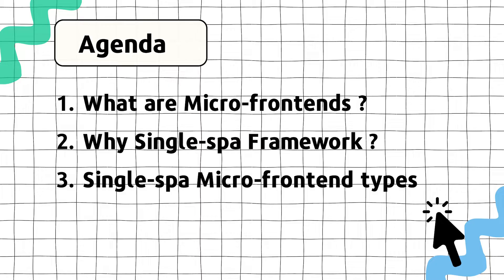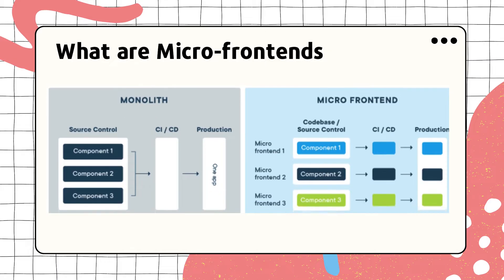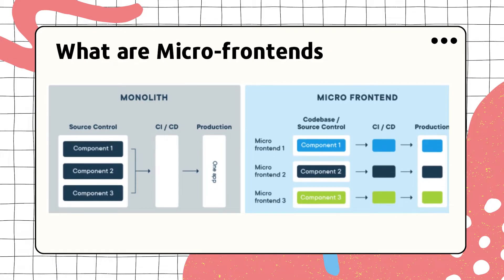Let's see our first topic: what are micro frontends? Micro frontend is an architectural pattern. As you can see in our two pictures, on the left side we have the monolith pattern and on the right side we have the micro frontend pattern. Let's talk about monolith first — we have three components: component one, two, and three, all inside one single project, which means a monorepo.